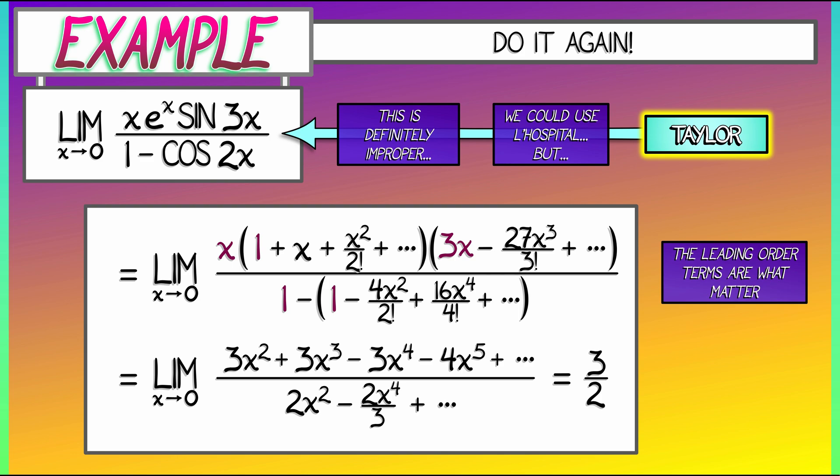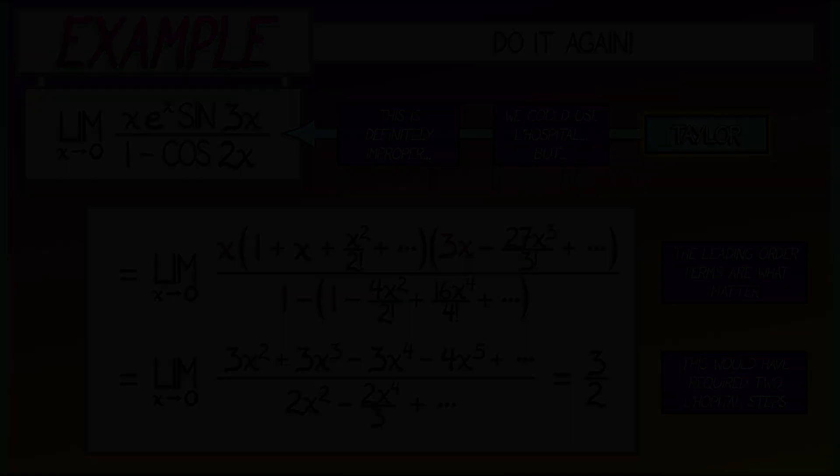Now, that was pretty simple. We could have used L'Hopital's rule to get at this, but because the leading order terms in the top and the bottom were quadratic terms, degree two terms, this would have required applying L'Hopital's rule twice. We are really seeing the ratio of the second derivatives of these terms.